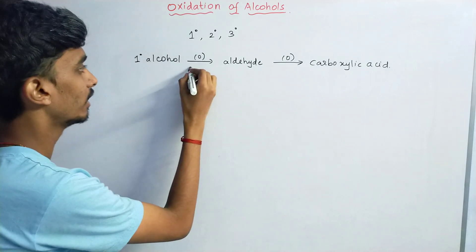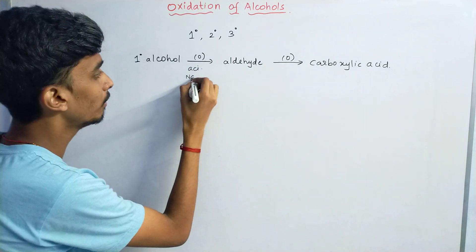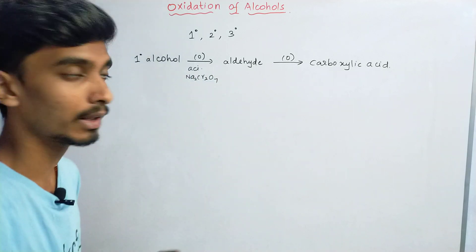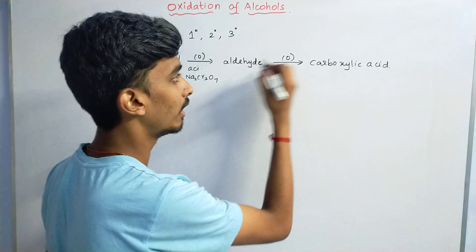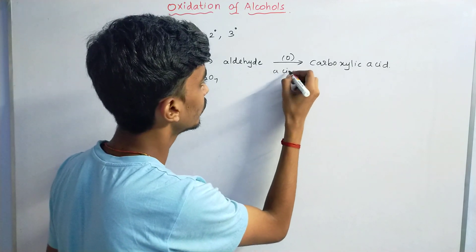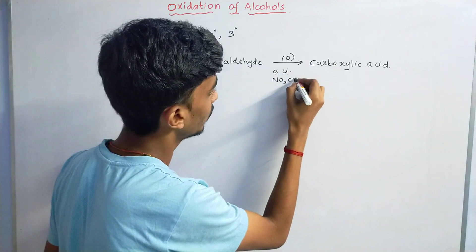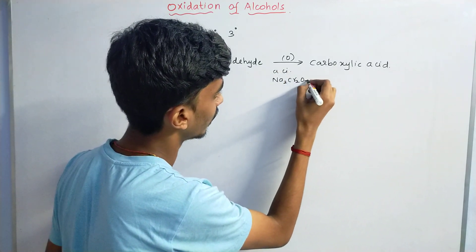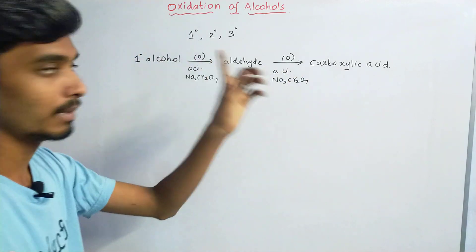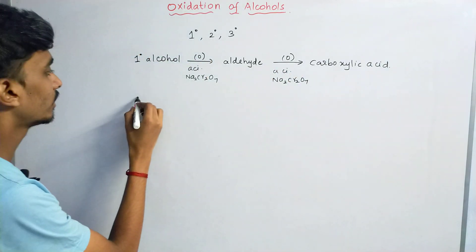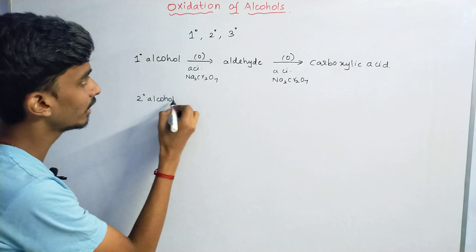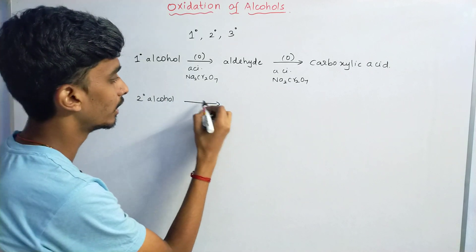The reagent we use for this is acidified sodium dichromate. Using acidified sodium dichromate, primary alcohol follows the sequence: first converted to aldehyde, then further oxidized to carboxylic acid.